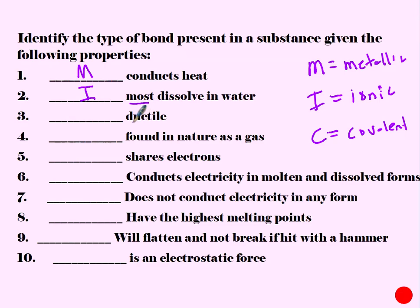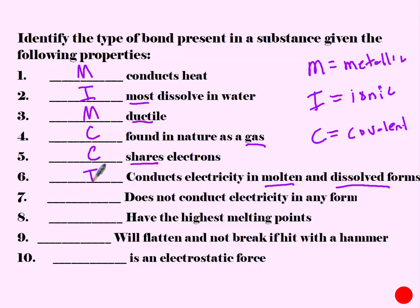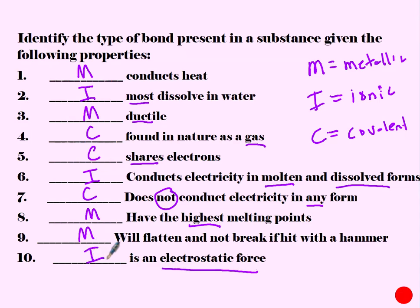Found in nature as a gas should be covalent. Sharing electrons is covalent. Conducts electricity in liquid or dissolved form should be ionic. Does not conduct electricity in any form is covalent. Has the highest melting point is metallic. Will flatten and not break when hit with a hammer — that's the definition of malleable, which is metallic. And is an electrostatic force was our definition for ionic.